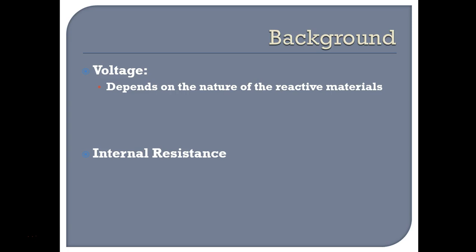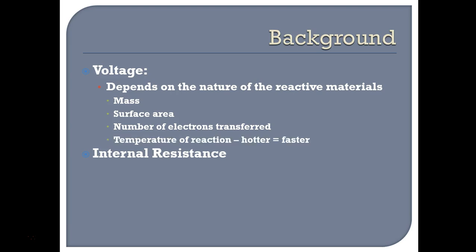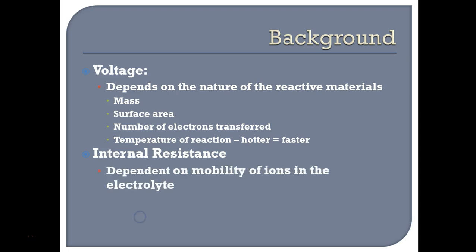Voltage. We looked at a lot of these things in Unit 9. The voltage of a cell will depend on the nature of the reactive materials — basically the electrodes being used and the electrolytes. We're looking at differences in mass, surface area, and the number of electrons transferred. Those will affect the voltage. Also, the temperature of the reaction — the hotter your cell is, the faster the reaction will go. Internal resistance limits the amount of current that can flow through the cell, and this is mainly dependent on the mobility of ions in the electrolyte. The faster the ions are able to move, the lower the internal resistance will be.